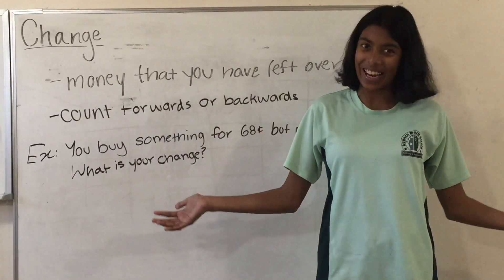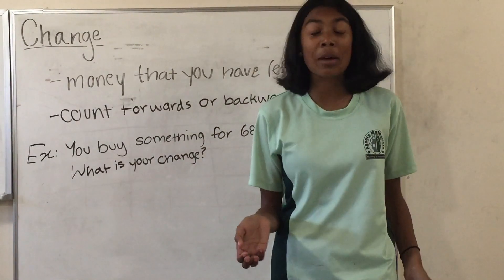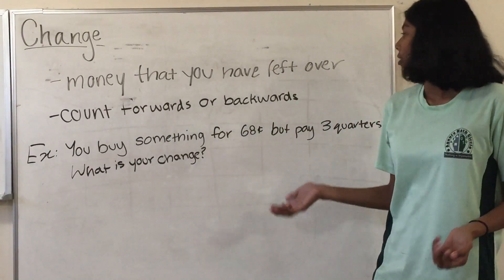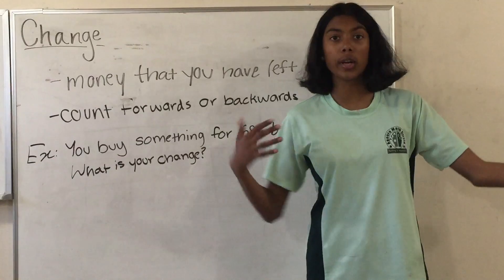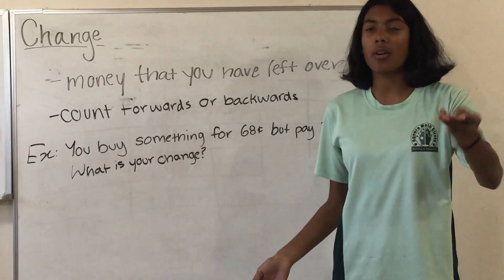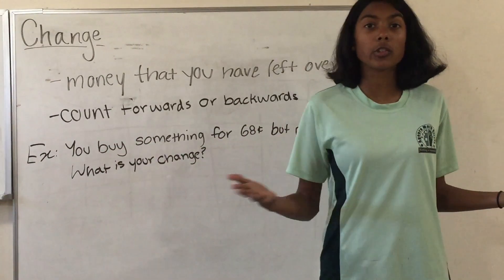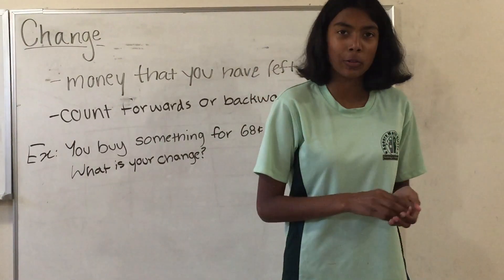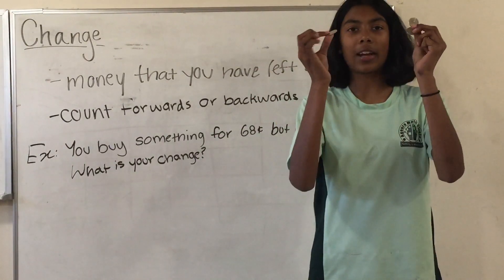Now let's move on to change. Change is the money you have left over. To calculate the amount of change you can count forwards or backwards, and I'll explain more of that in our example. So you buy something for 68 cents, but you pay three quarters.